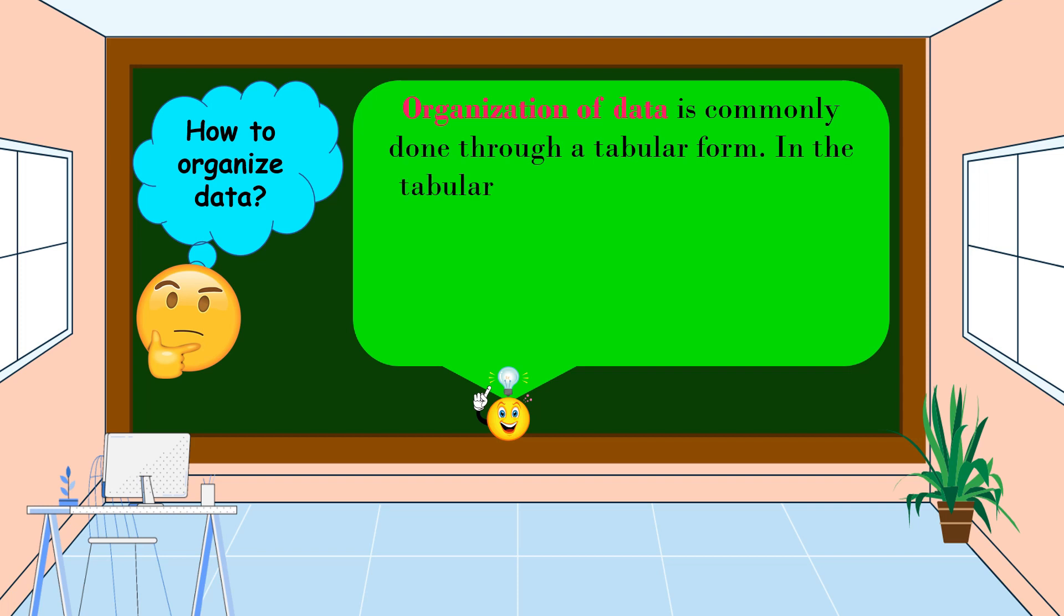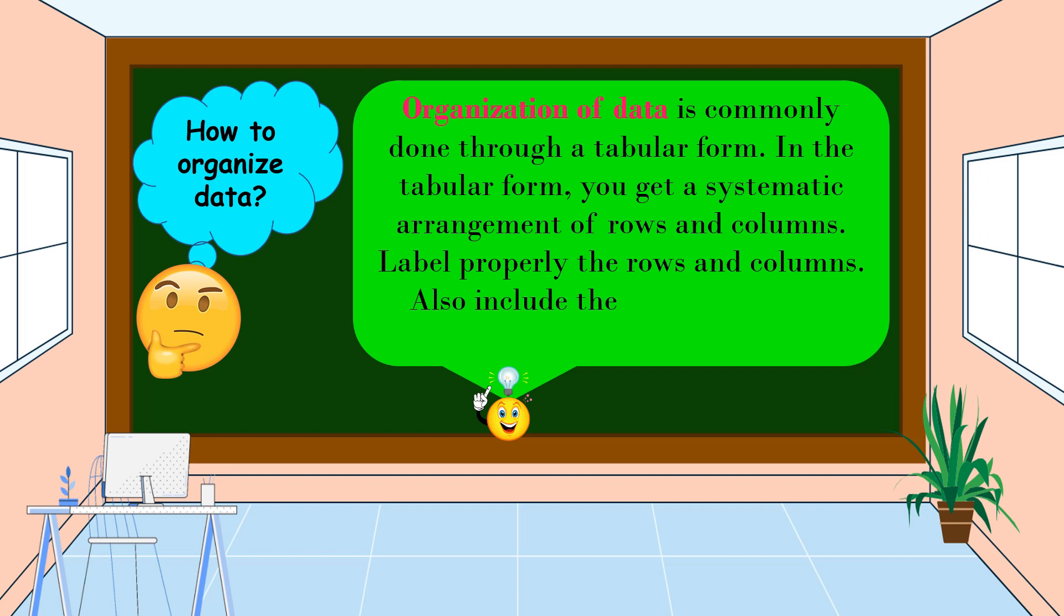In the tabular form, you get a systematic arrangement of rows and columns. Label properly the rows and columns. Also include the title that briefly describes the data in the table.